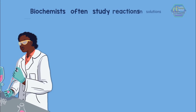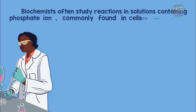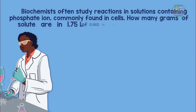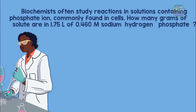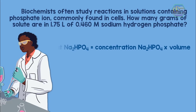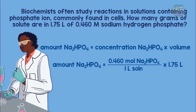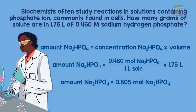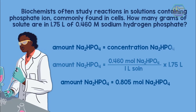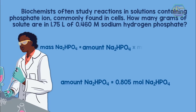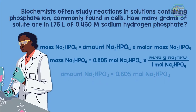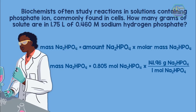For another problem: biochemists often study reactions in solutions containing phosphate ion, commonly found in cells. How many grams of solute are in 1.75 liters of 0.460 M sodium hydrogen phosphate? We multiply the known solution volume by the known molarity to find the amount in moles of solute, then convert it to mass in grams by multiplying by the molar mass of the solute.